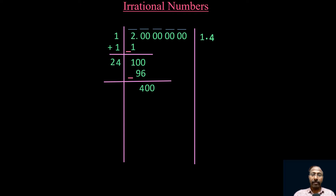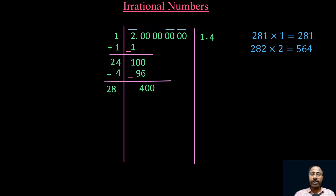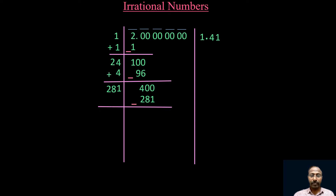Add the digit 4 to 24: 24 + 4 = 28. Now check in which multiple 400 will fit. We have 281×1=281, and 282×2=564, which is more than 400. So we take 281×1=281. Subtract 281 from 400: 400 − 281 = 119. Write down the next pair of zeros.